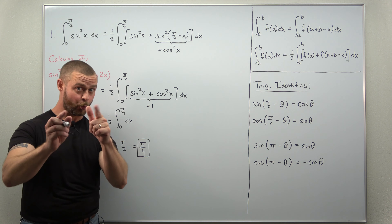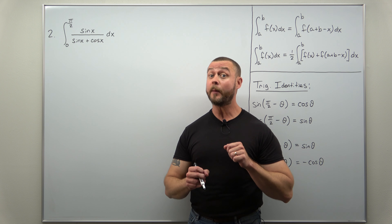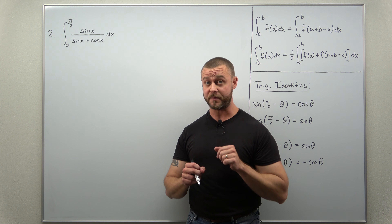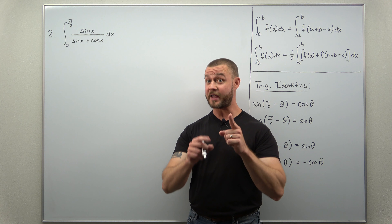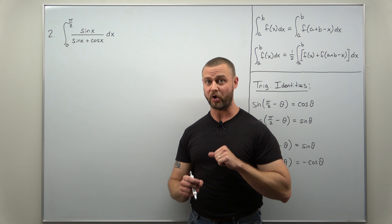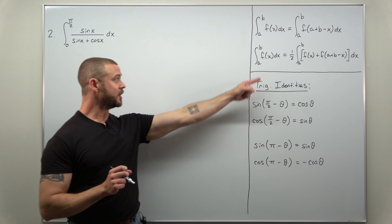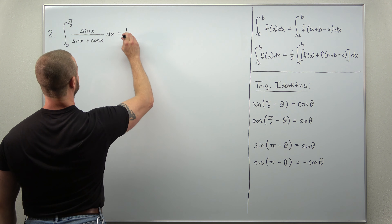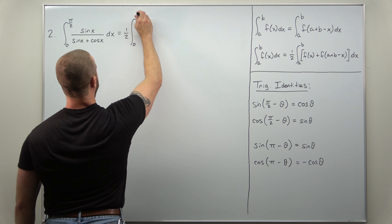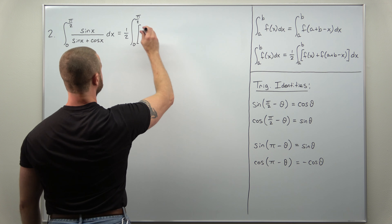The first example is relatively simple since it can be done with more basic methods — we don't strictly need the King Rule there. But our second example is much more complicated with straightforward methods. We'll evaluate the integral from 0 to pi over 2 of sine of x divided by the quantity sine of x plus cosine of x using our peculiar property, where the work will be minimal. Again using a equals 0 and b equals pi over 2, we apply the alternate version.